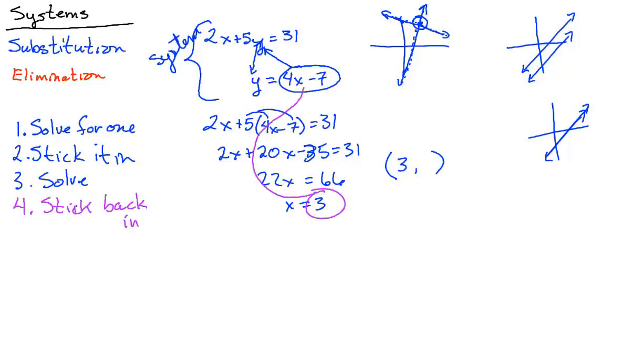So we go back and we can stick it in right up here. Four times 3 is 12 minus 7 is 5. So we get the point 3, 5. Does it work on both of them? It better because when we substituted it in, we made this y and that y the same. So yeah, there you go. That is substitution.